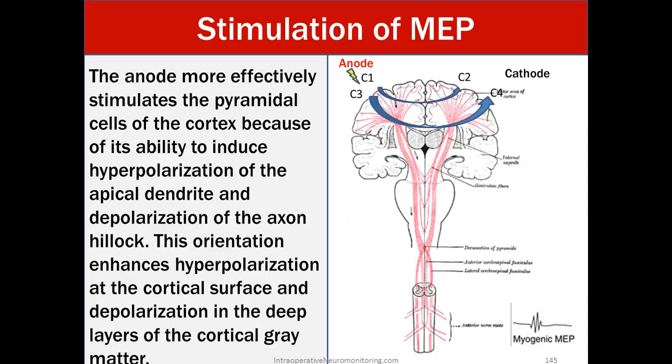Stimulation of a motor evoked potential. The anode more effectively stimulates the pyramidal cells of the cortex because of its ability to induce hyperpolarization of the apical dendrite and depolarization of the axon hillock. This orientation enhances hyperpolarization of the cortical surface and depolarization of the deep layer of the cortical gray matter. So if you remember that picture of the neuron, we had the dendrites, then we had the cell body or soma, and then we had the axon hillock coming down all the way to the axon. So here it is saying that you have a hyperpolarization at the cortex where the dendrites are and a depolarization at the axon hillock. That's why anodal stimulation is preferred over cathodal stimulation.